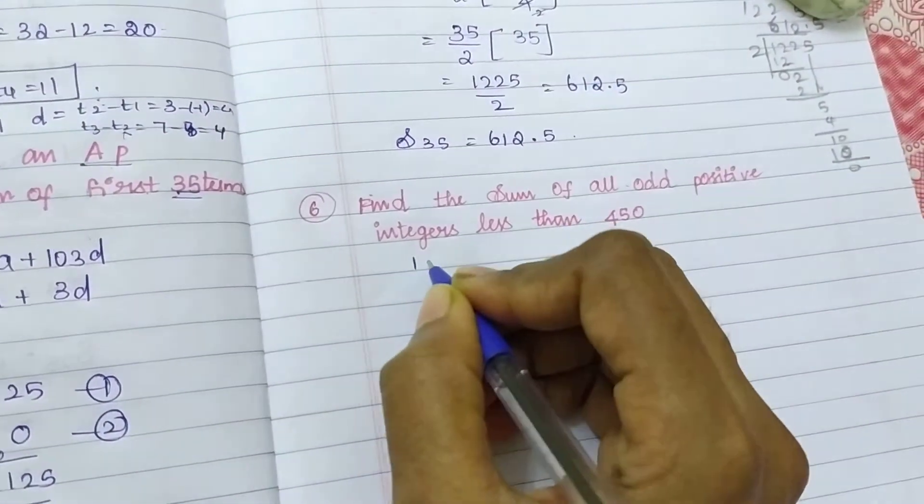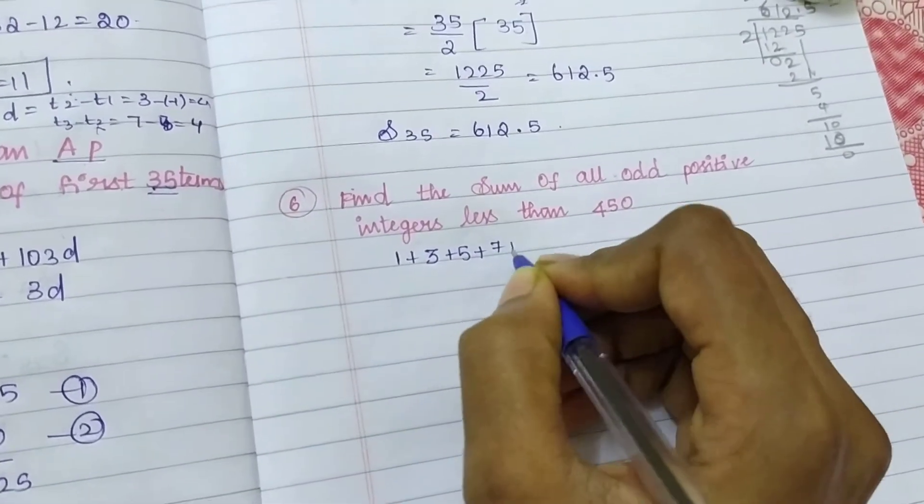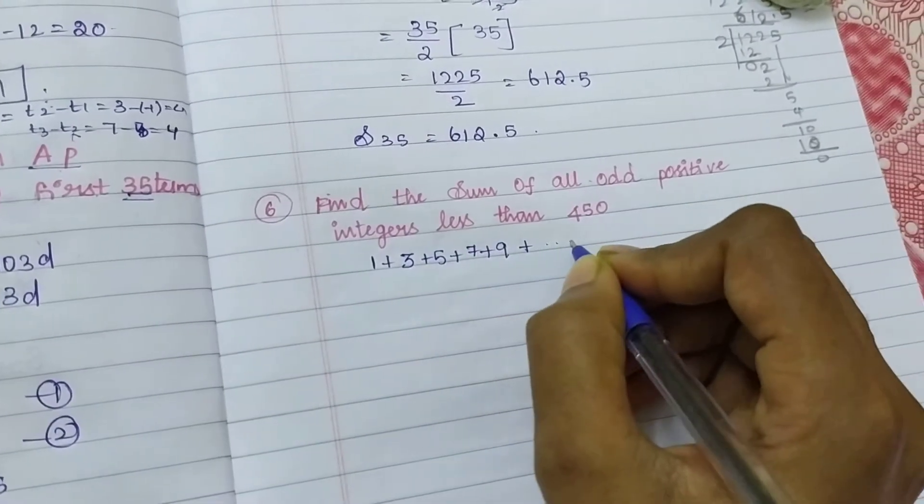Positive odd numbers means 1, 3, 5, 7, 9, etc.